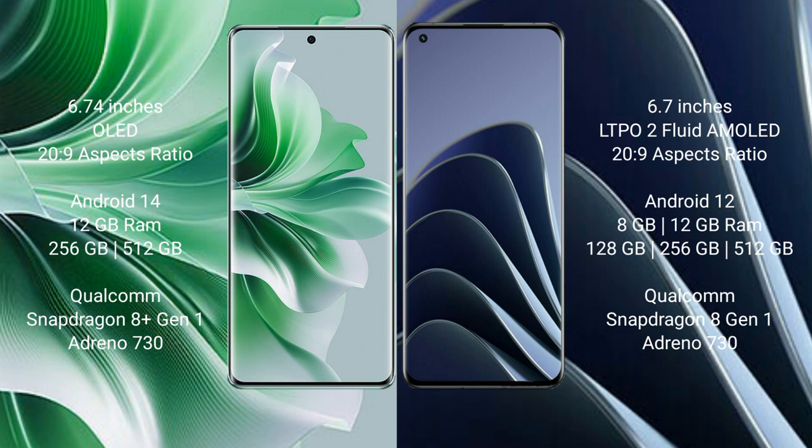Oppo Reno 11 Pro runs on the Android 14 operating system. OnePlus 10 Pro runs on the Android 12 operating system. Oppo Reno 11 Pro comes with 12GB RAM and 256GB internal storage.